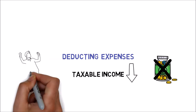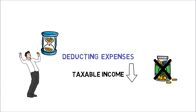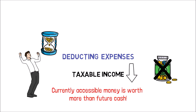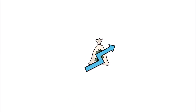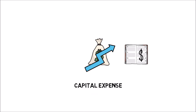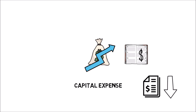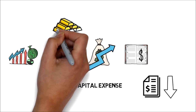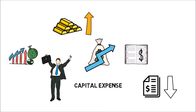It is also beneficial to consider the time value of money — currently accessible money is worth more than future cash because of its earning potential. However, if a firm wants to improve its earnings and book value, it may choose to incur a capital expense while only deducting a small amount from the income statement. This results in a higher net income to show investors as well as a greater asset value on the balance sheet.